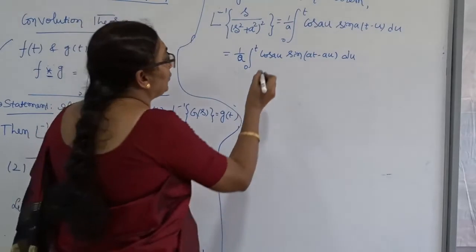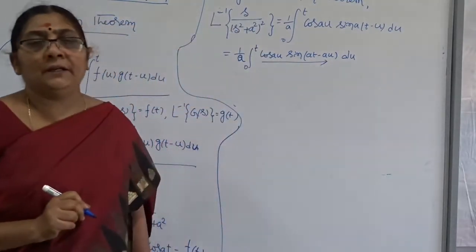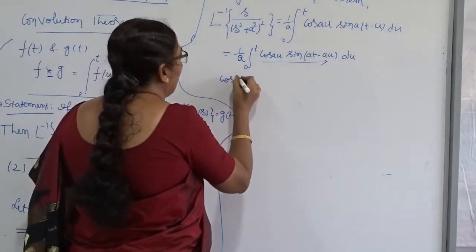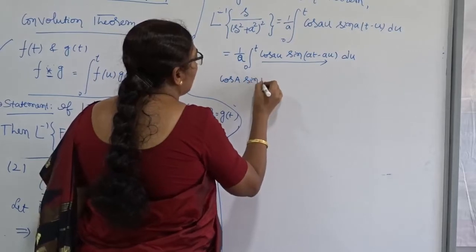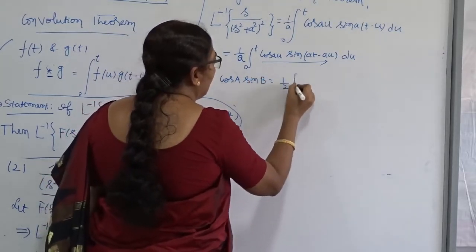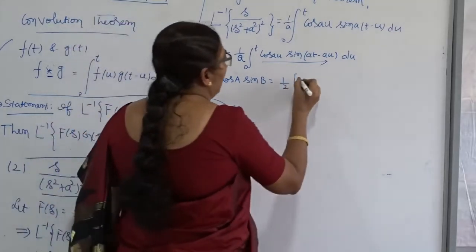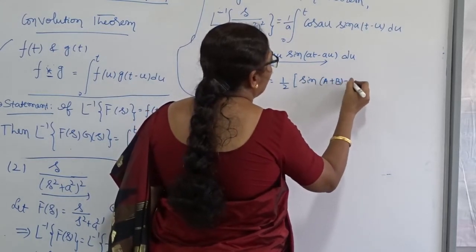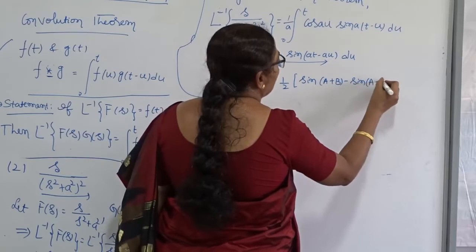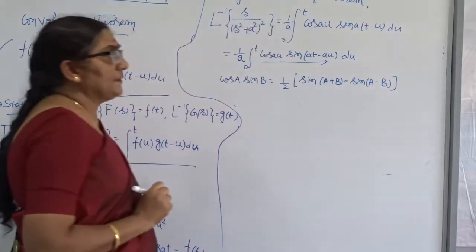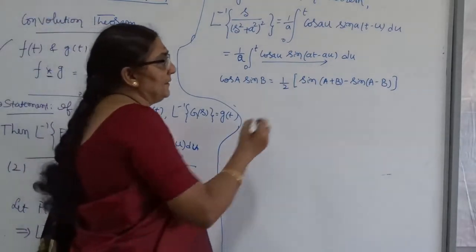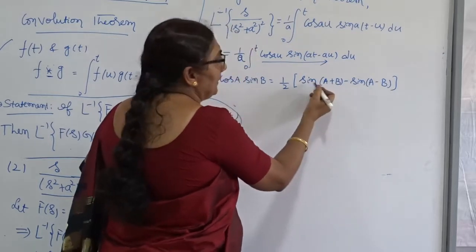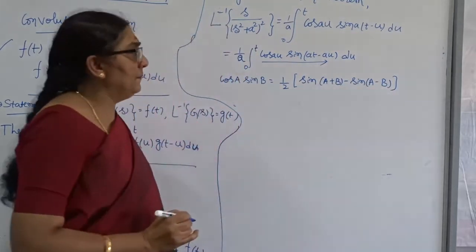This is just the product of two trigonometric functions. We don't have a formula to integrate it directly, so I'll use the transformation formula. We know that cos(A)sin(B) = ½[sin(A + B) − sin(A − B)]. You already studied this at the pure level: sin(A+B) = sin(A)cos(B) + cos(A)sin(B), and sin(A−B) = sin(A)cos(B) − cos(A)sin(B), then simplify.